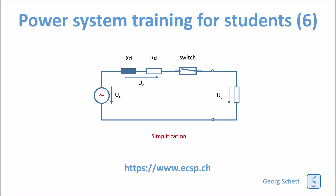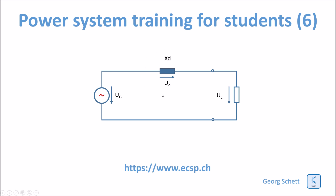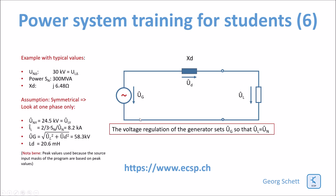We want to further simplify this model. There is no internal resistance anymore — it's just a coil: the coil impedance, which is an inductance, and then we have the load. Let's now see what happens on a 300 MVA machine at 30 kV if we gradually increase the load.